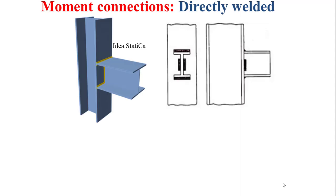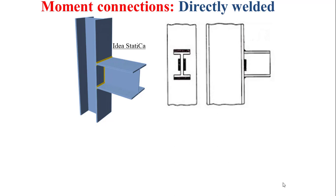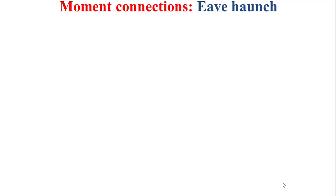Now I'll introduce another type of moment connection: the directly welded moment connection. As depicted in the figure, we have a beam as child member connected to a column as parent member using a direct welding of its flanges and its web to the flange of the column. Stiffeners can also be used in the directly welded moment connection.